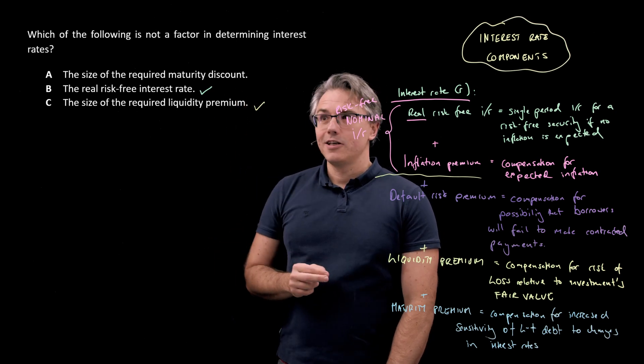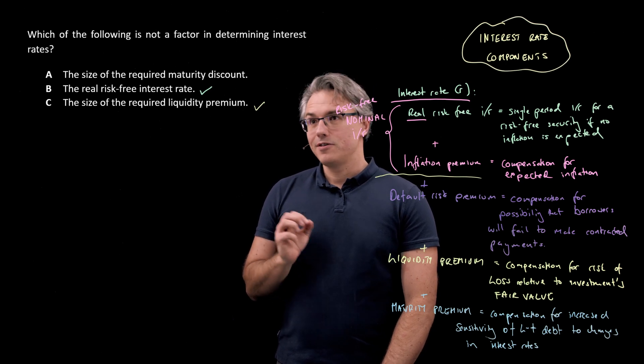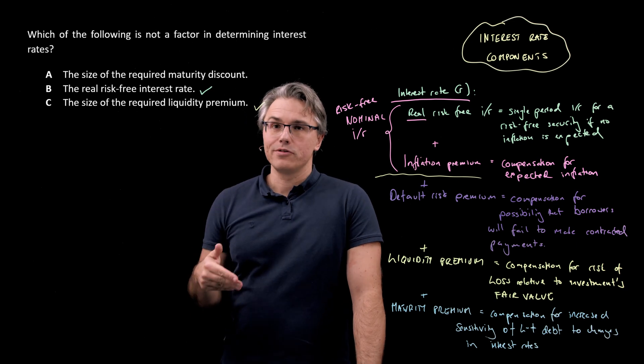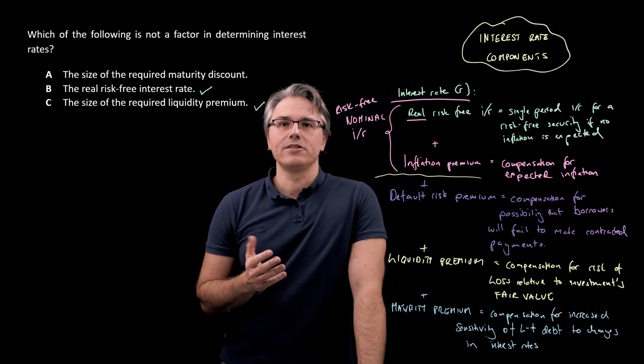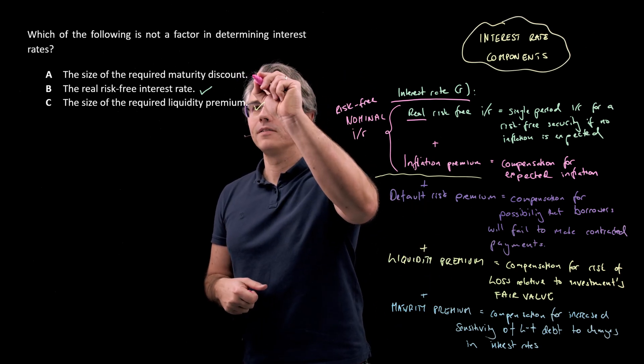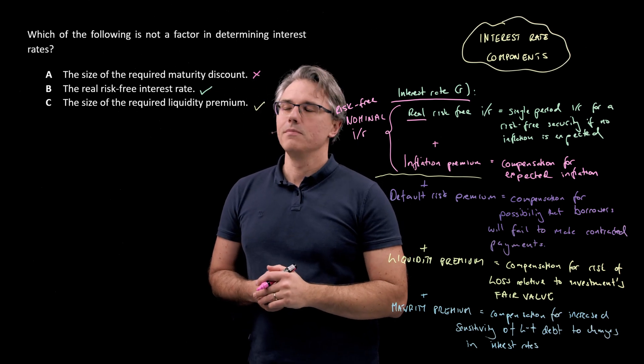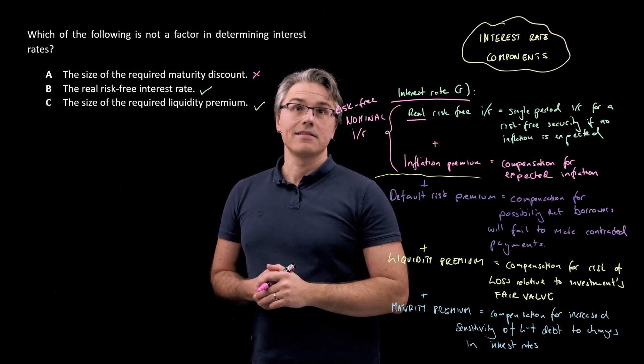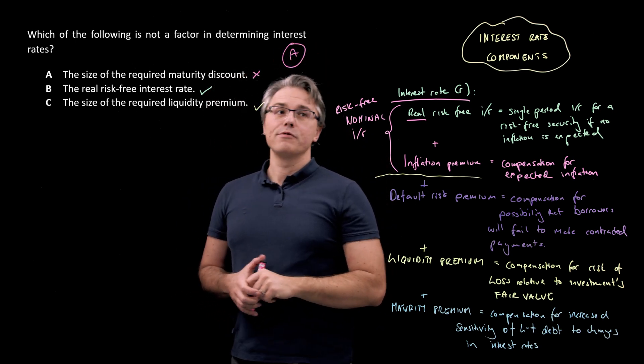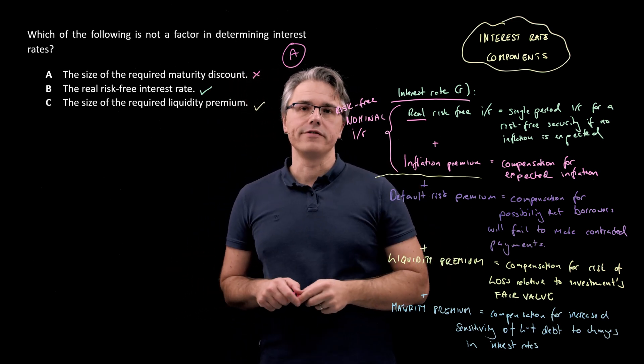However, answer A, even though it talks about maturity, it actually talks about a maturity discount, which is not true. There is a maturity premium. Longer term securities, the ones with longer maturities, require more of a return to compensate us for this risk. So over here, it's a no, this should be maturity premium. But that itself makes answer A, the answer to the question, we're going to find the one which is not a factor in determining interest rates. And this is what we've done.